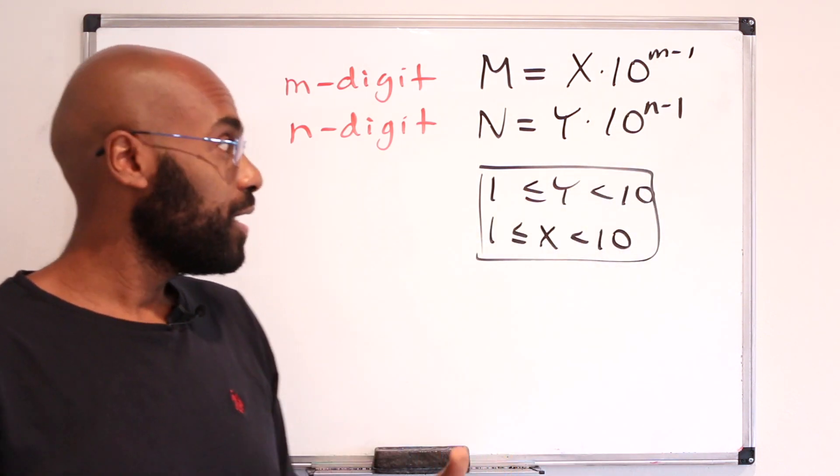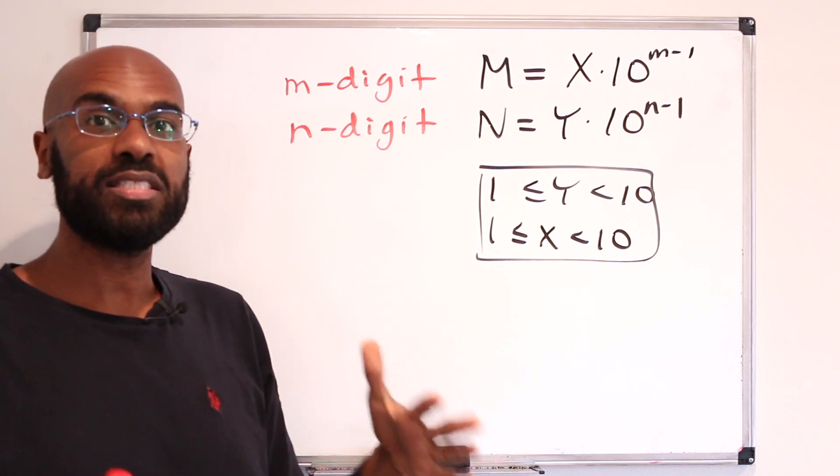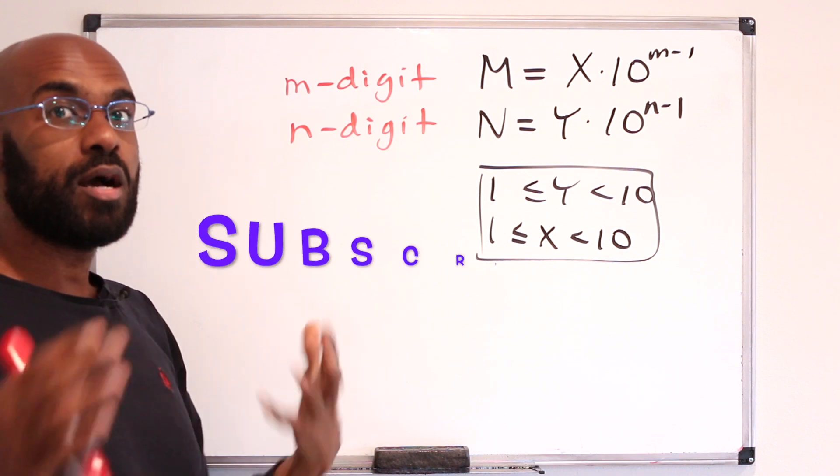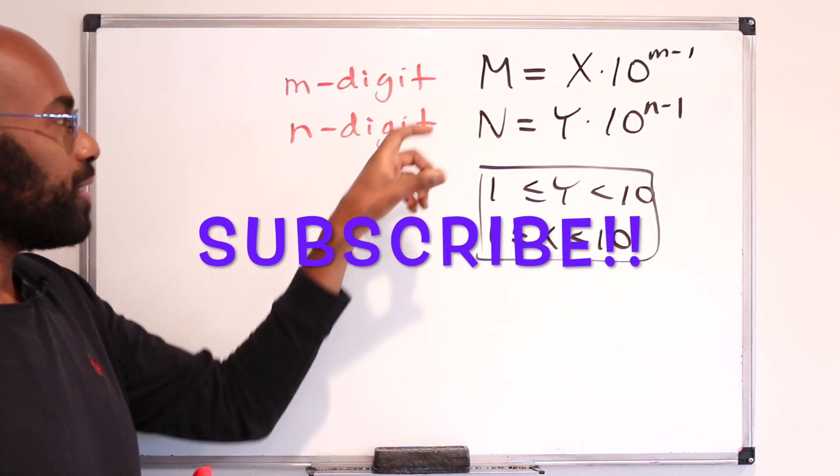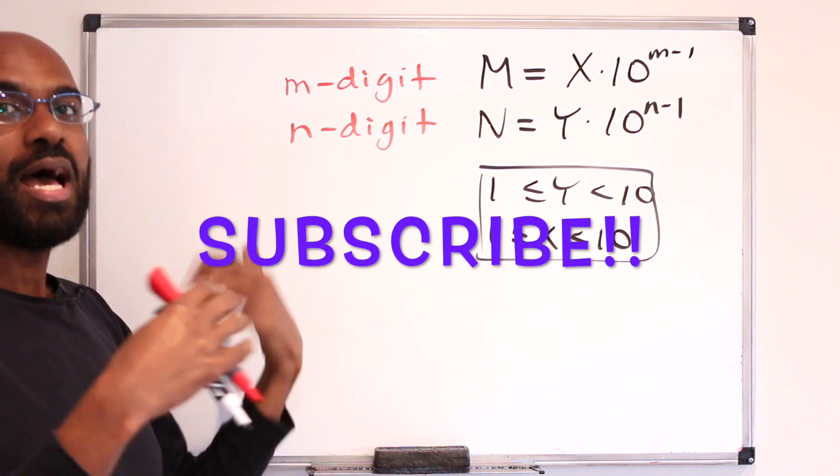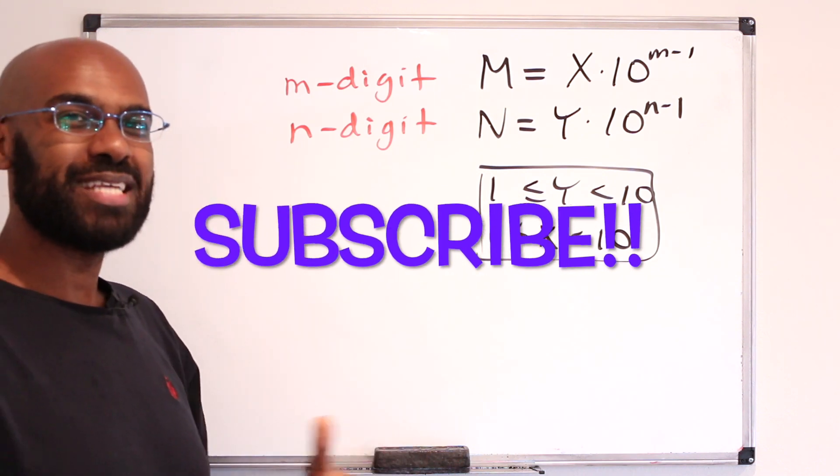So pause this video right now, try some of the analyses, make some observations, and leave your observations in the actual comments, and come back to the video to get a sense of what the density of the number of pairs m is, where the product is m plus n digit versus m plus n minus 1 digit.